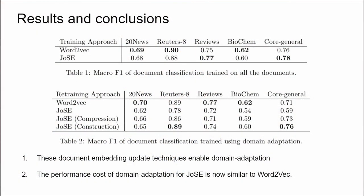As well as three publicly available datasets, these update methods were tested on two datasets of scientific literature collected for this study. For comparison, results are presented for Word2Vec and the original JOSE model, trained on all the data as a rough upper bound, and trained using domain adaptation as a reference.